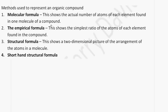There are various methods to represent an organic compound. It can be represented by a molecular formula, which shows the actual number of atoms of each element found in one molecule of the compound. We can also represent an organic compound using its empirical formula, which shows the simplest ratio of the atoms of each element found in the compound. We can also draw the structural formula, which shows a two dimensional picture of the arrangement of the atoms in the molecule.